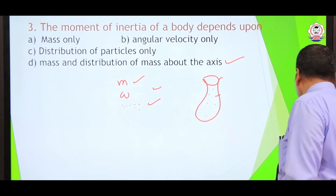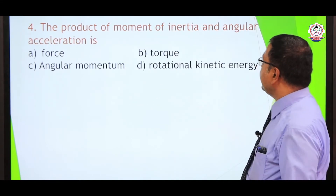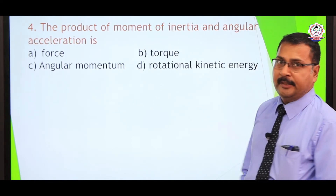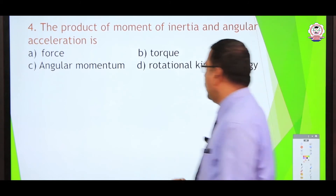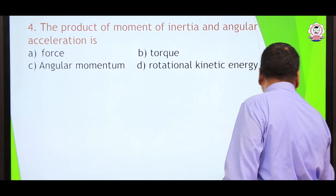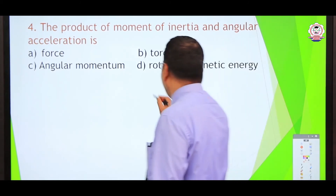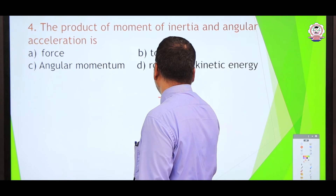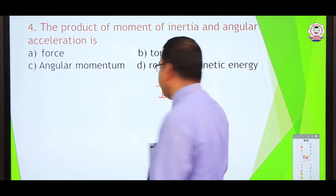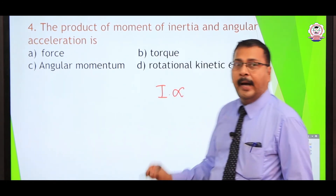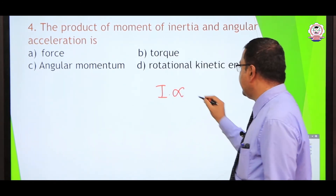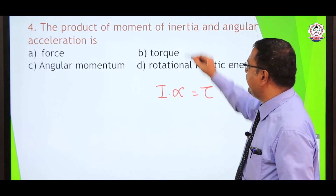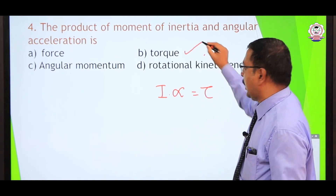The next problem: what is the product of moment of inertia and angular acceleration? Substituting I for mass and alpha for linear acceleration in Newton's second law, I times alpha equals torque. So the answer is torque.